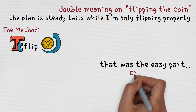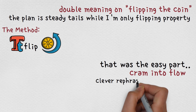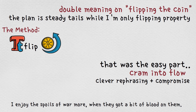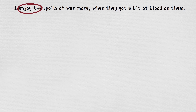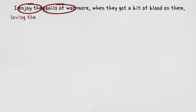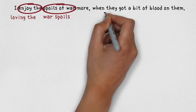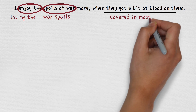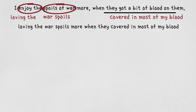Okay, that was the easy part. Let's try to cram this into our flow. What we have to figure out is how to not let the content jam spill out, by using clever rephrasing techniques and, unfortunately, compromise. Raw: I enjoy the spoils of war or more when they got a bit of blood on them. Rhyme form: we have to change 'I enjoy the' to something which replicates our flow — we can turn it into 'loving the.' Also, 'spoils of war' doesn't flow, but if we go with 'war spoils' it fits. Second part: 'when they got a bit of blood on them' can become 'when they covered in most of my blood.' So we end up with: 'loving the war spoils more when they covered in most of my blood.'